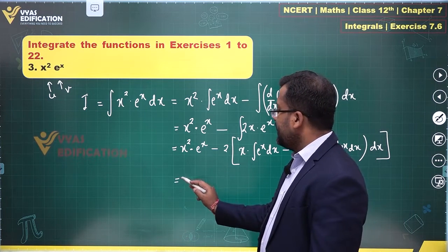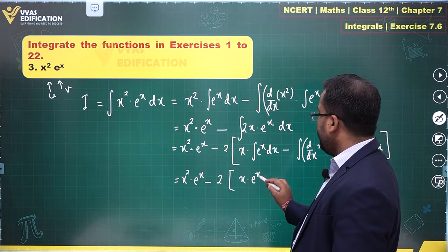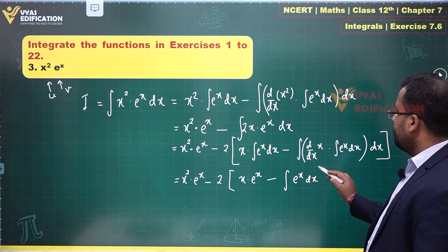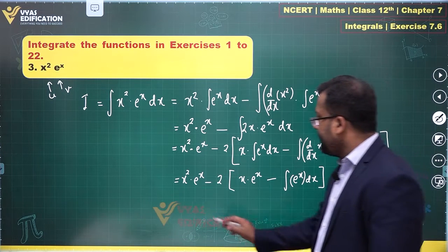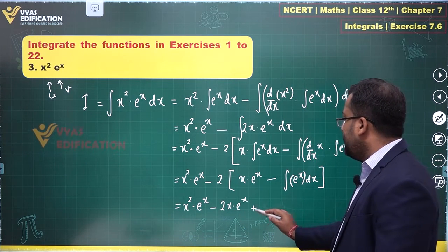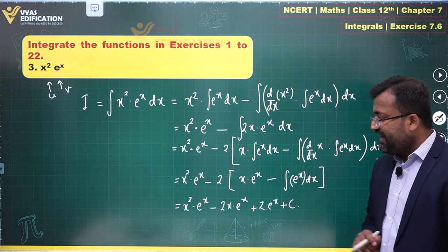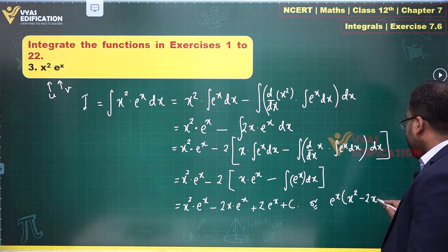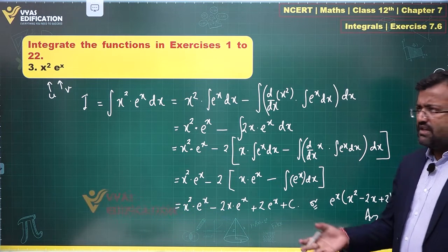Taking out the 2, integral of x·eˣ dx again by parts: x·eˣ minus integral of 1·eˣ dx = x·eˣ − eˣ. So the full expression becomes x²·eˣ − 2(x·eˣ − eˣ) + C = x²·eˣ − 2x·eˣ + 2·eˣ + C. This can be written as eˣ(x² − 2x + 2) + C, which is the final answer.